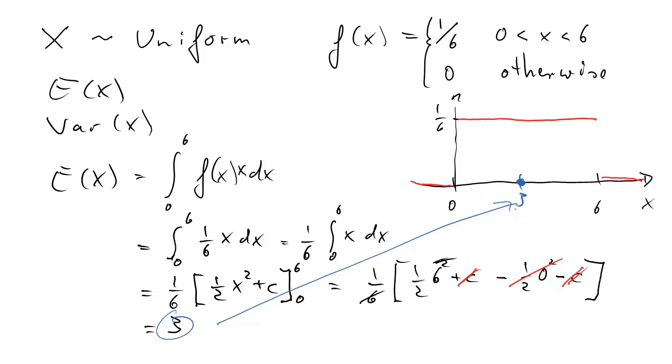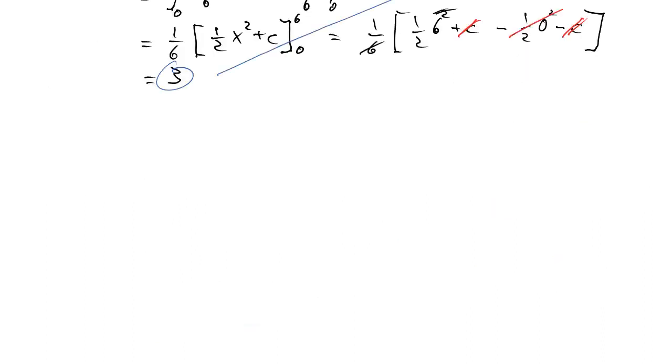How do we go about solving this problem for the variance? The variance of X is the integral from 0 to 6 of (x minus the expected value of x) squared times f(x), the density, dx.